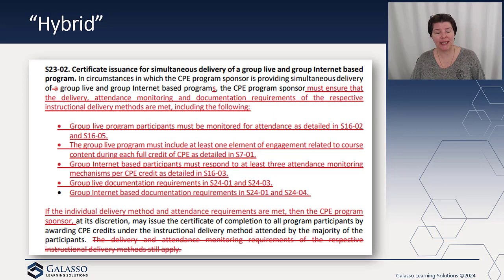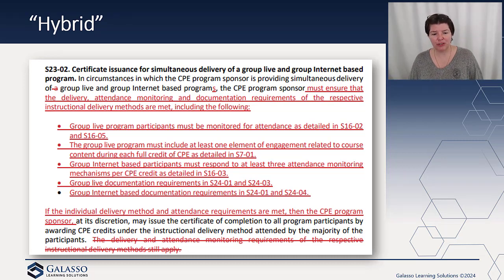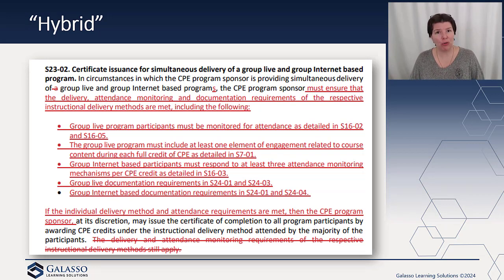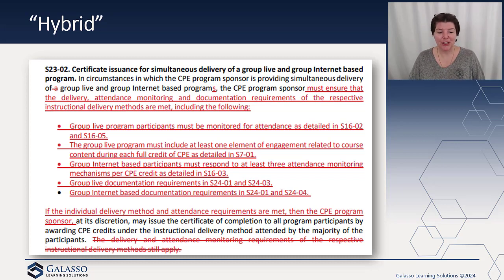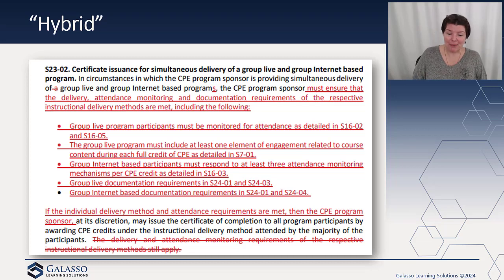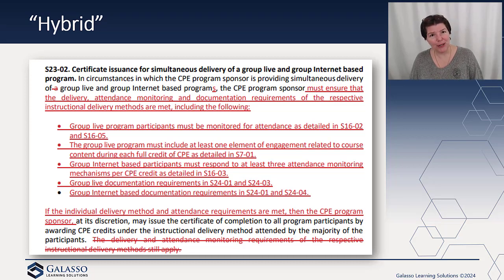The other option people ask about is: can't you just issue it two different ways? So in that scenario, for the group live people issue it group live, and then for the online people do the group internet-based. We can do that, but again it costs extra because you have to have polling for those who are online and engagement for the people in person. They're very clear here: the group live program participants must be monitored for attendance; group live has to have the element of engagement; group internet-based has to answer the polling questions and meet the other requirements.